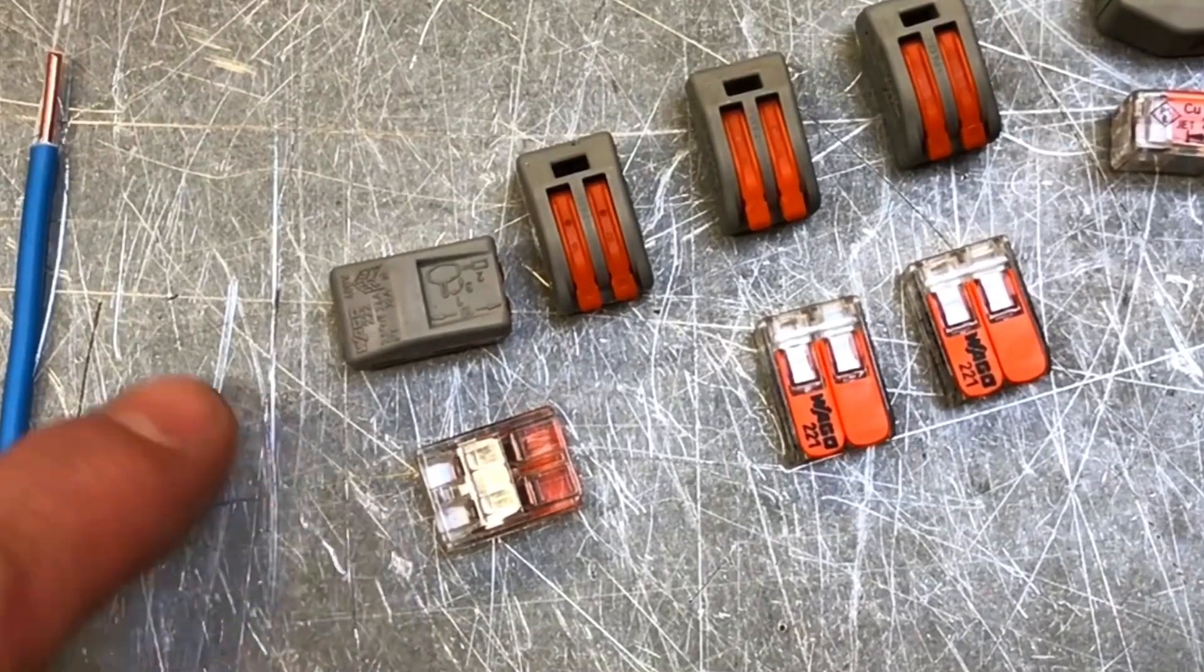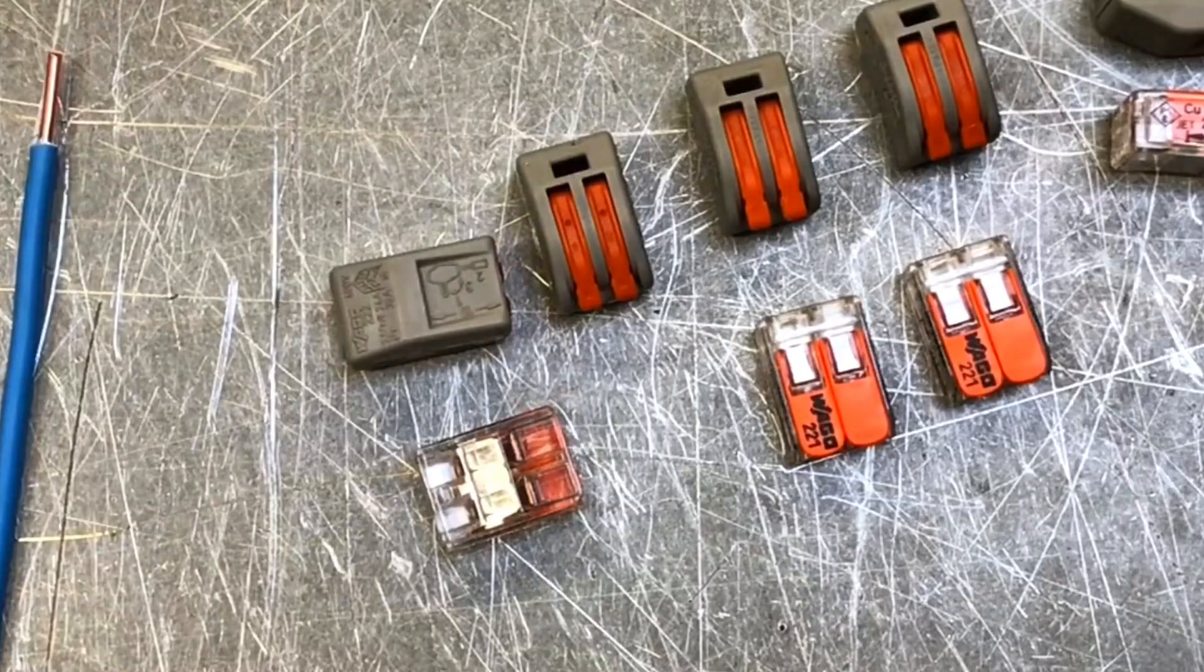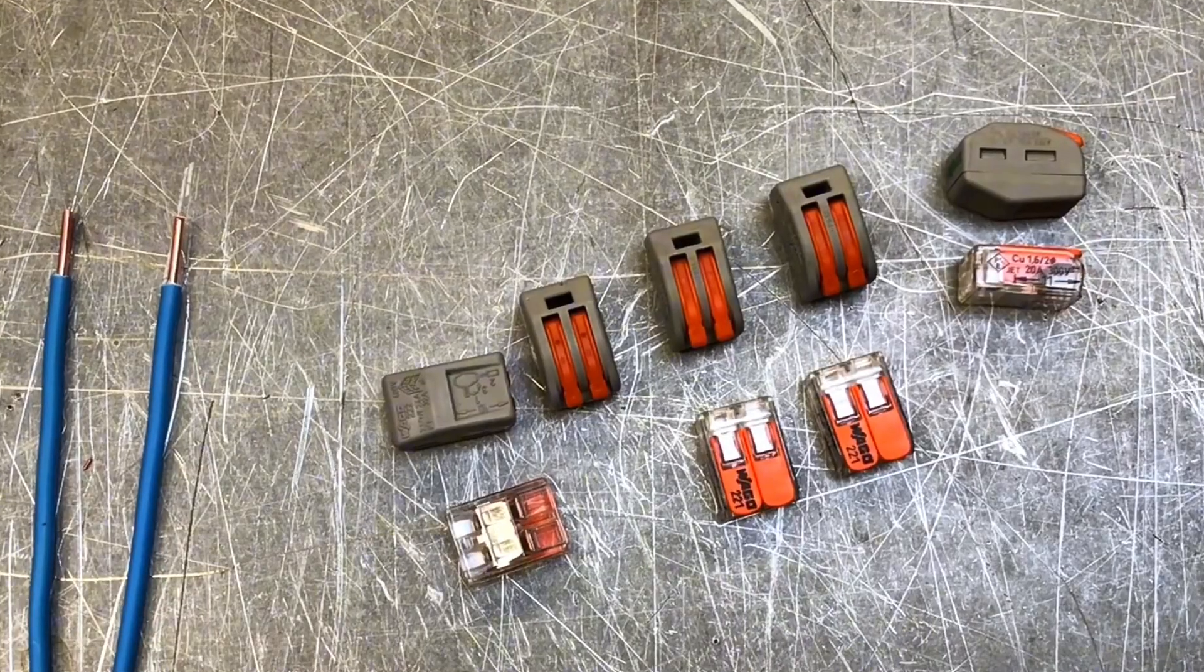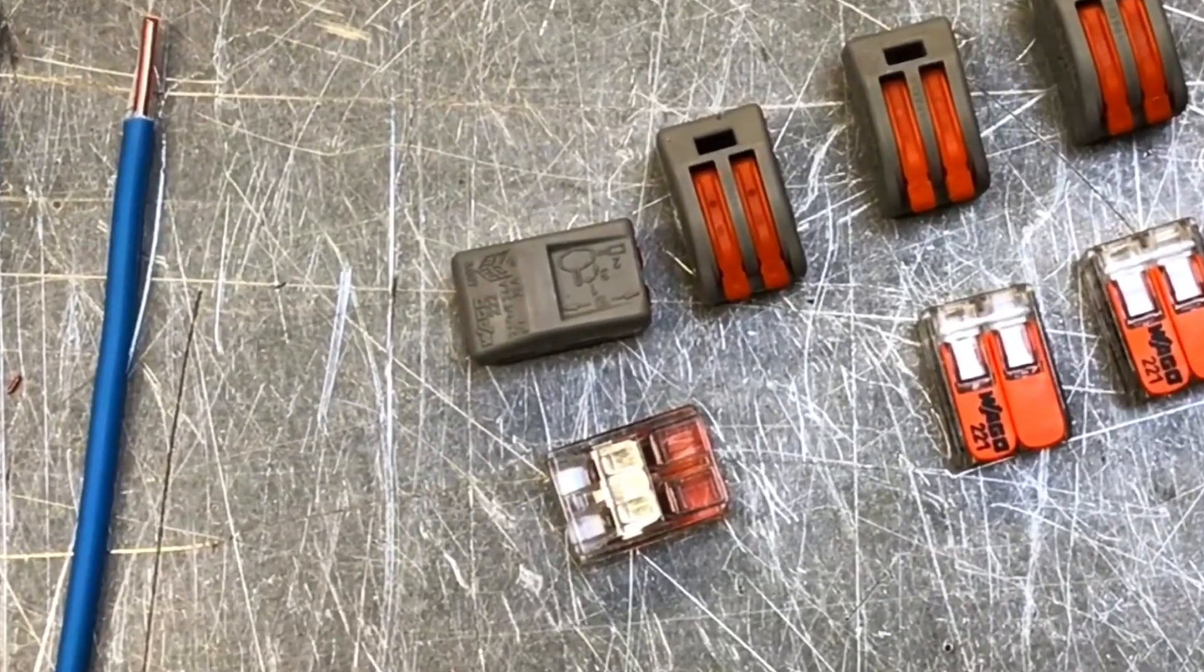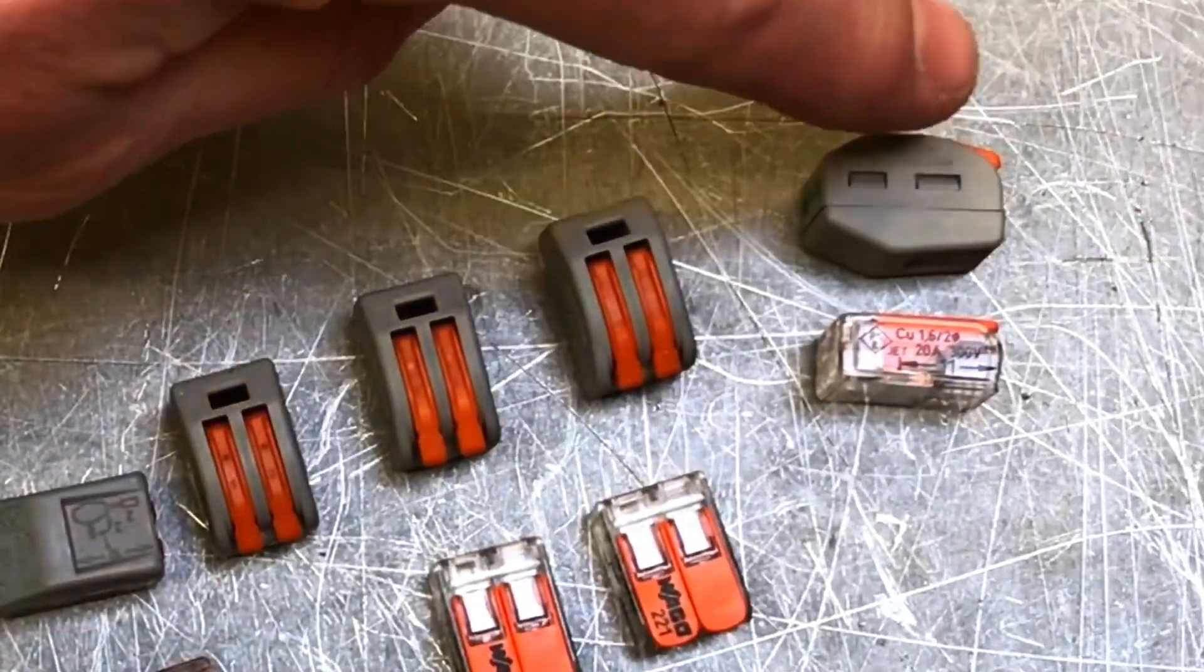We're going to look at the comparison between the 221 series compared to the original 222 series. With the new 221, it's now transparent so you can clearly see the connections, and the size is actually 40% smaller.